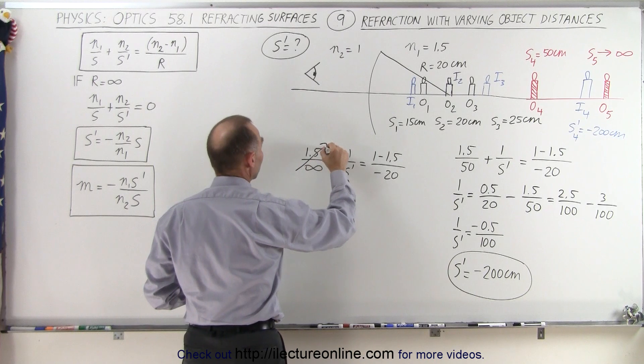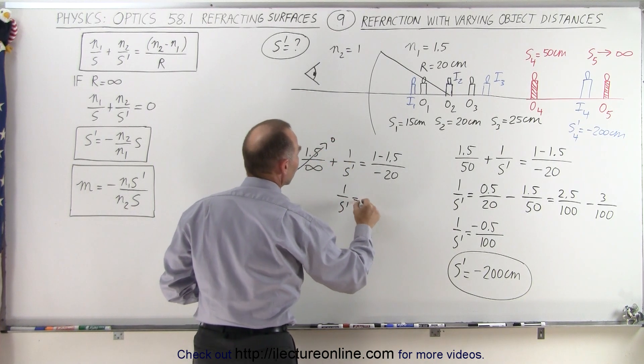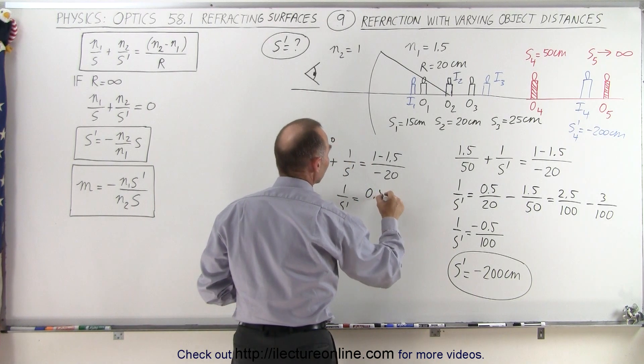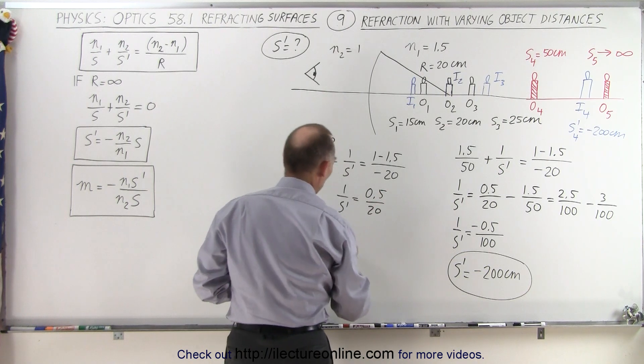And we have 1 over s prime is equal to 0.5 over 20, or s prime is equal to 20 divided by 0.5, which is 40 centimeters.